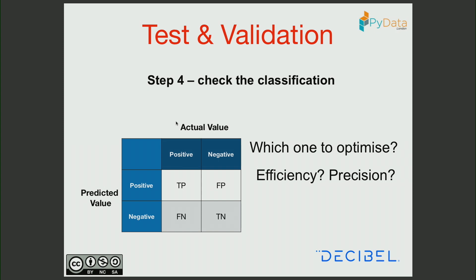What to optimize — efficiency or precision — depends on the business. For example, if you want to minimize the number of false positives, you optimize accordingly.